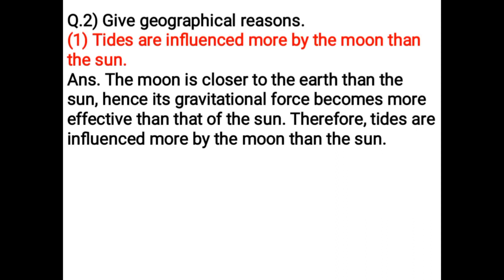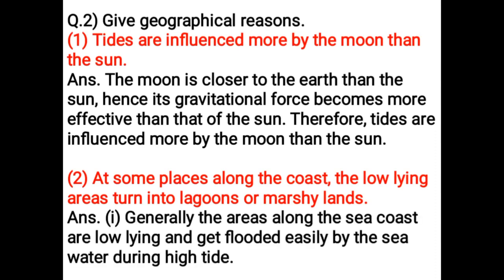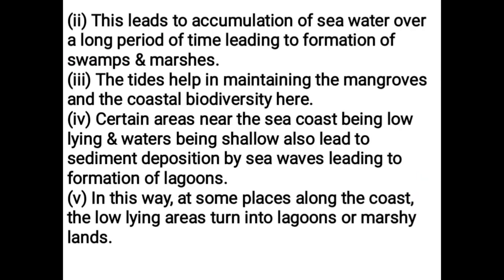At some places along the coast, the low-lying areas turn into lagoons or marshy lands. The areas along the sea coast are low lying and get flooded easily by seawater during high tide, leading to accumulation of seawater over a long period of time and the formation of swamps and marshes. The tides help in maintaining the mangroves and the coastal biodiversity. Certain areas near the sea coast, being low lying and shallow, also lead to sediment deposition by sea waves, leading to the formation of lagoons.